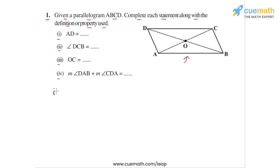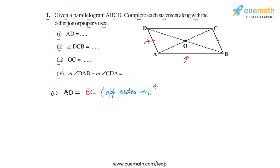Let's start with the first statement. We have AD equal to what? AD is this side of the parallelogram, and it will be equal to the opposite side, which is BC, because in a parallelogram, opposite sides are equal. So the first statement is completed as AD is equal to BC, and the reason is that opposite sides in a parallelogram are equal.